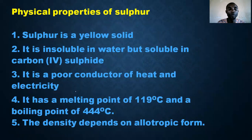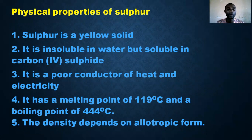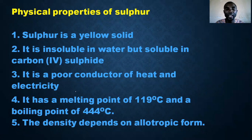The physical properties of sulfur: sulfur is a yellow solid. It is soluble in carbon disulfide but insoluble in water. It is a poor conductor of heat and electricity. It has a melting point of 119 degrees Celsius and a boiling point of 444 degrees Celsius.